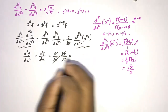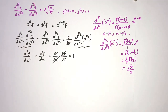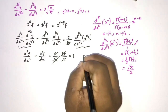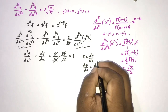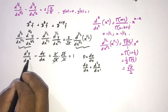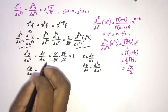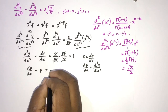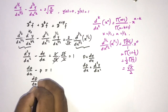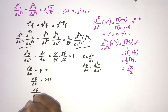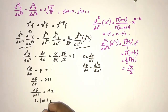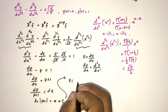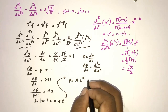Therefore we now have d²y/dx² − dy/dx = 1. Let p = dy/dx, so dp/dx = d²y/dx². The equation becomes dp/dx − p = 1, or dp/dx = p + 1. Separating variables: dp/(p+1) = dx. Integrating both sides: ln|p+1| = x + constant.